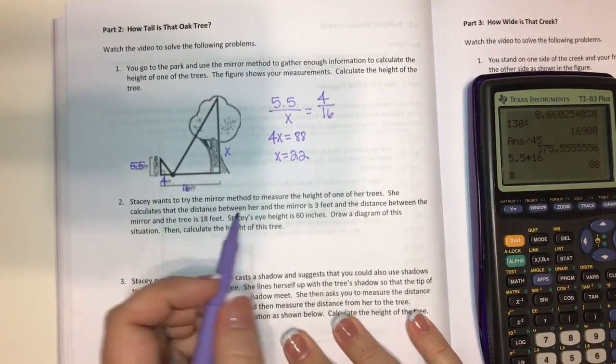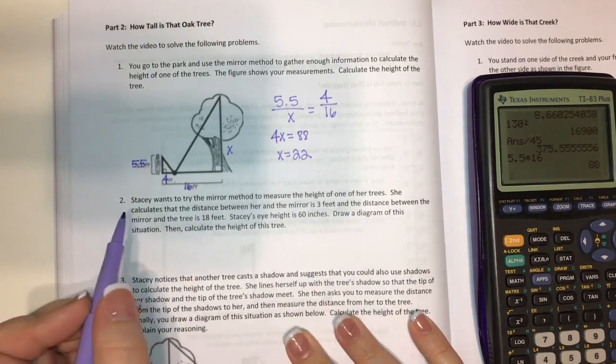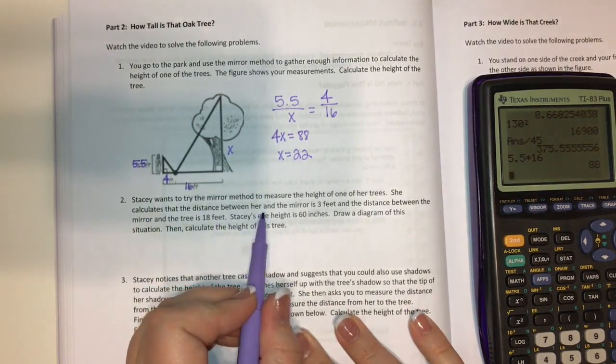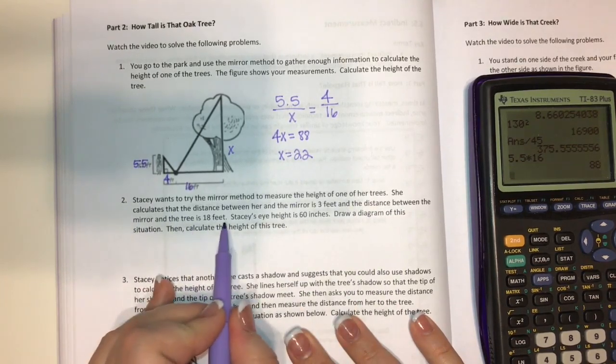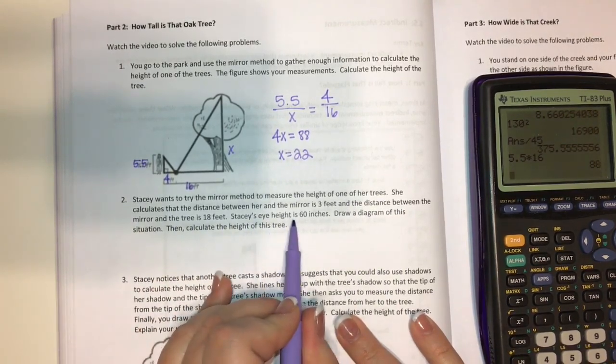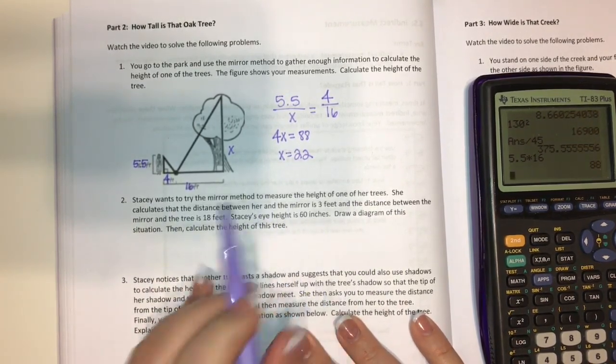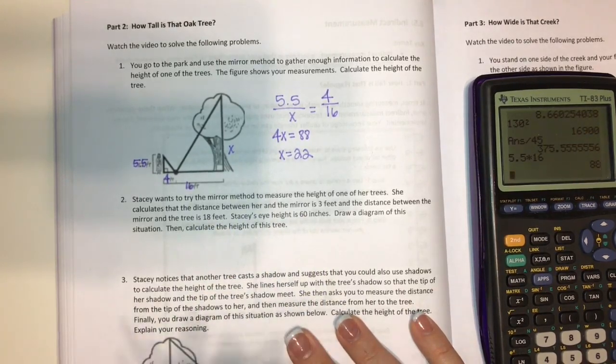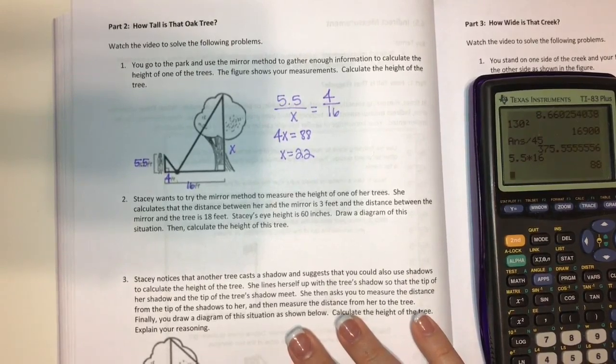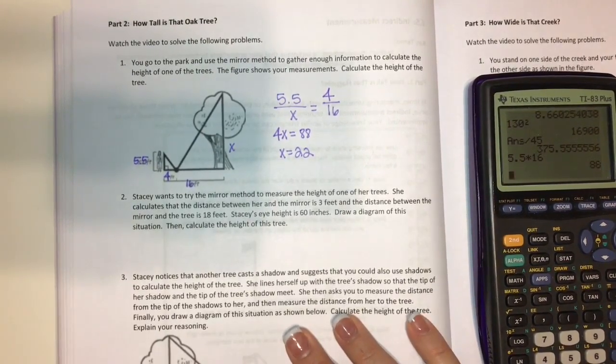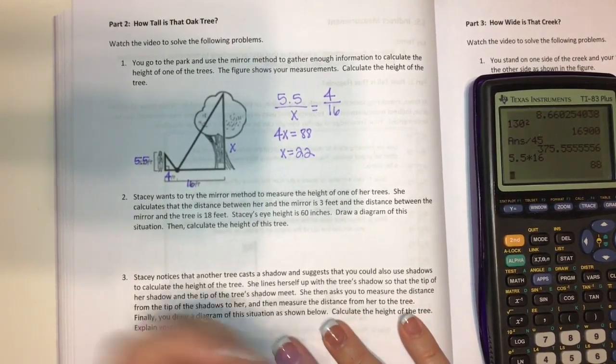Stacy wants to try the mirror method to measure the height of one of her trees. She calculates that the distance between her and the mirror is three feet, and the distance between the mirror and the tree's 18 feet. Stacy's eye height is 60 inches. Oh, the first thing I see here is we have different units. We have feet and inches. Draw a diagram of this situation and then calculate the height of this tree.